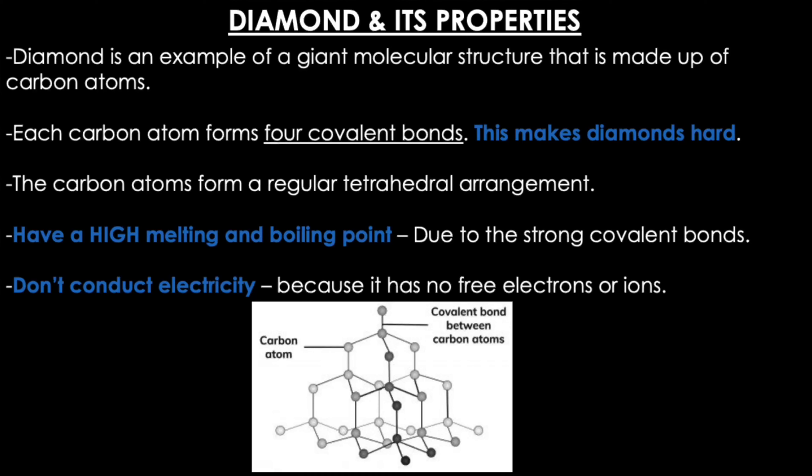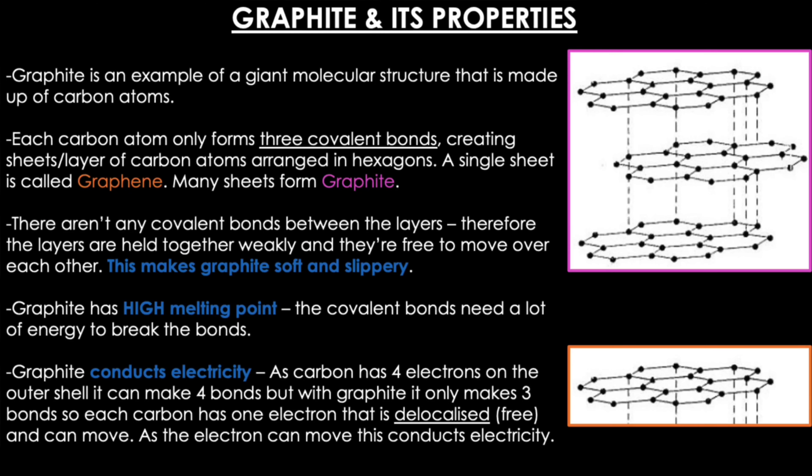Diamond and its properties. Diamond is an example of a giant molecular structure made up of carbon atoms. Each carbon atom forms four covalent bonds, which makes diamond hard. The carbon atoms form a regular tetrahedral arrangement. Diamond has a high melting and boiling point due to the strong covalent bonds, and it doesn't conduct electricity because there are no free electrons or ions to move around.